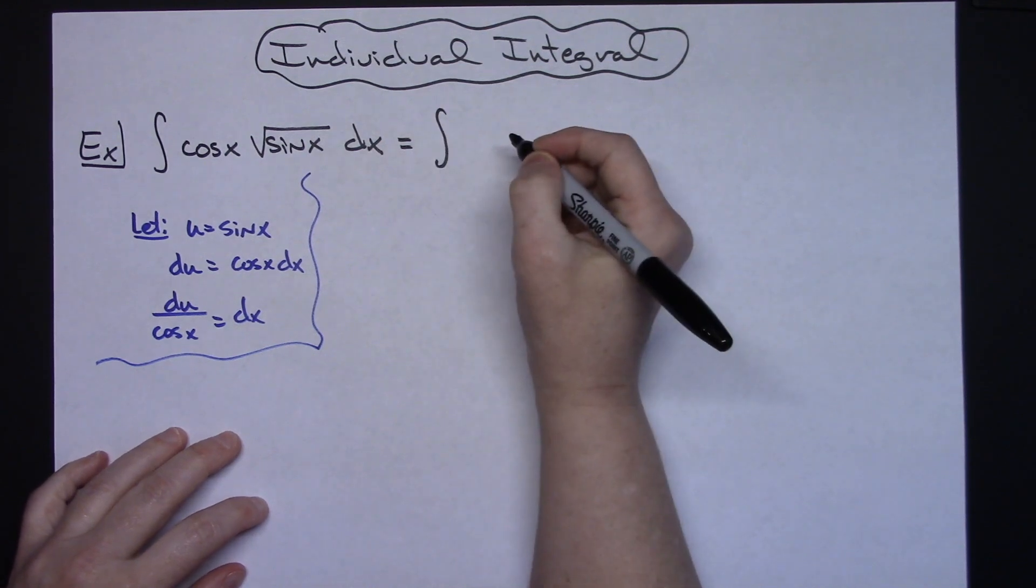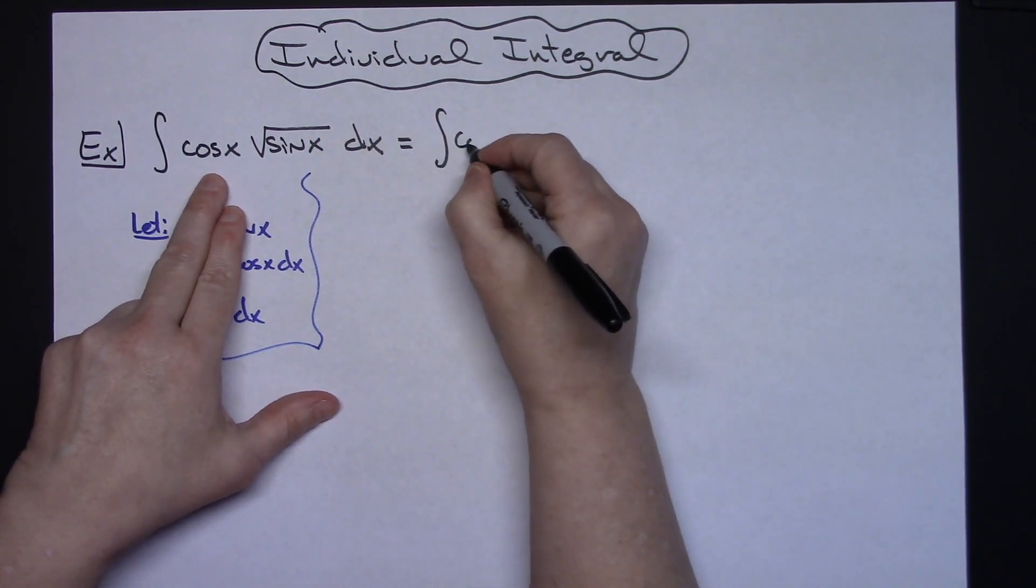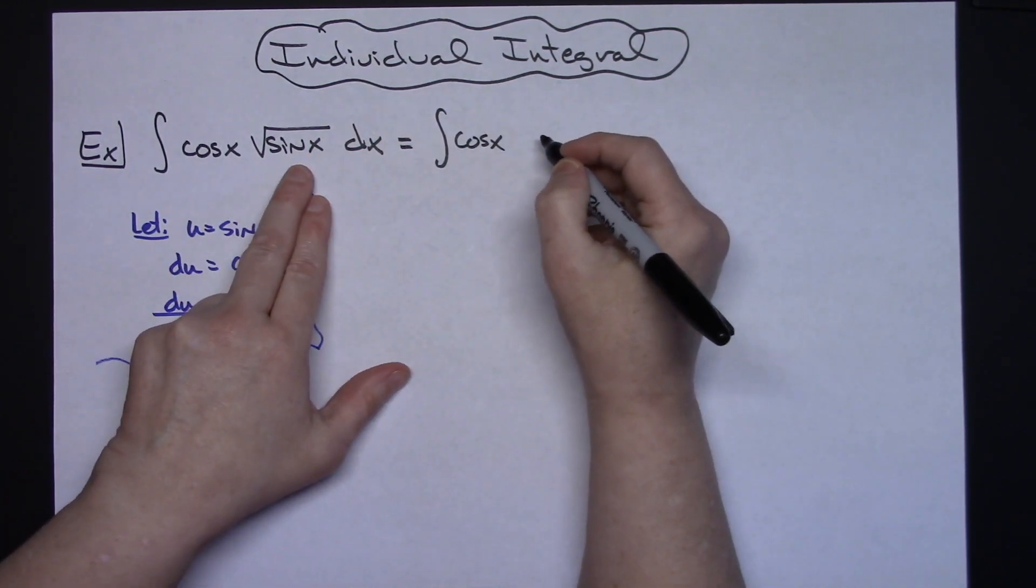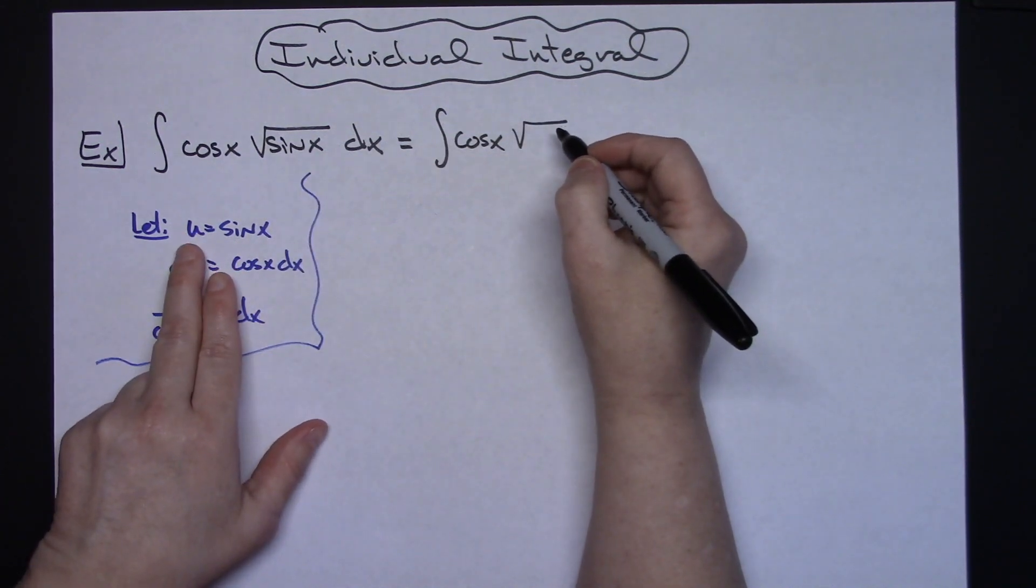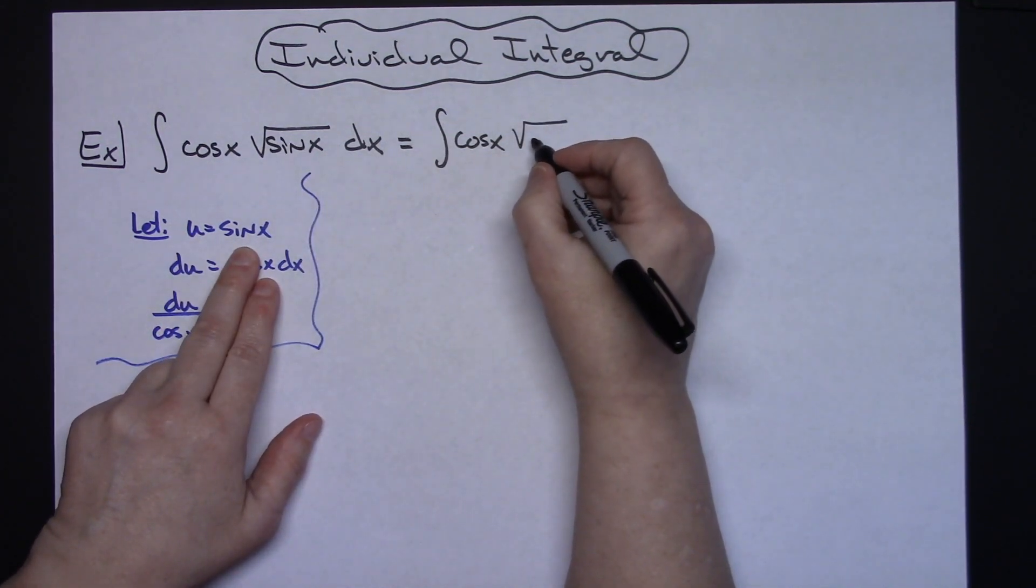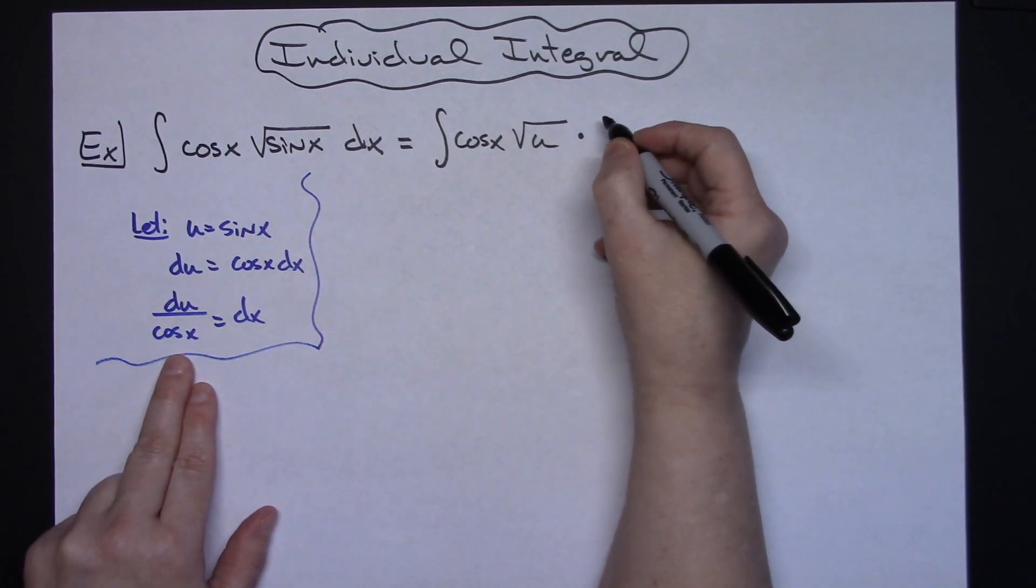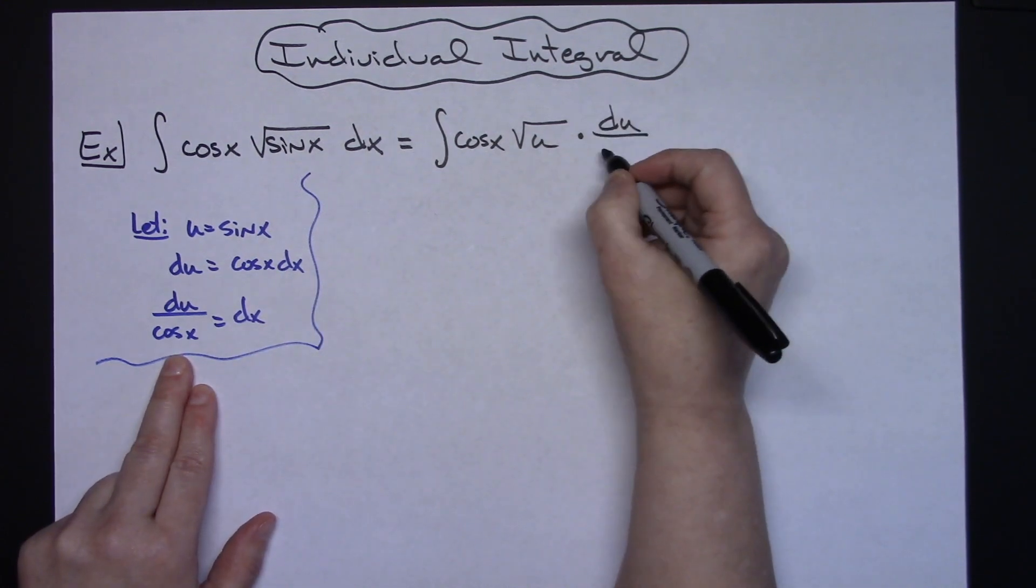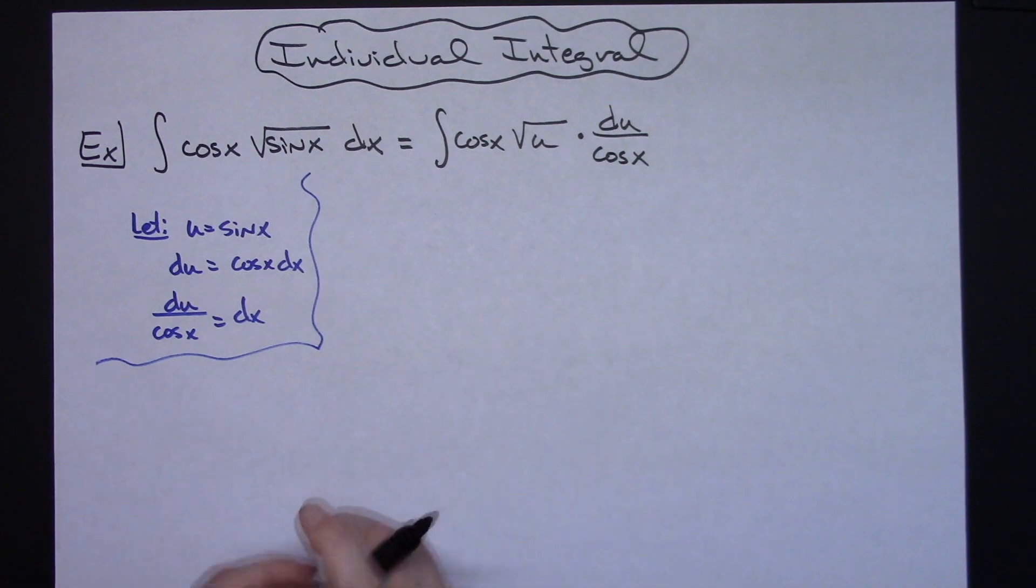So we will have the integral our cosine x will still be there then I will have square root of u because I'm going to replace sine x with u and then I'll replace the dx with the du over cosine x.